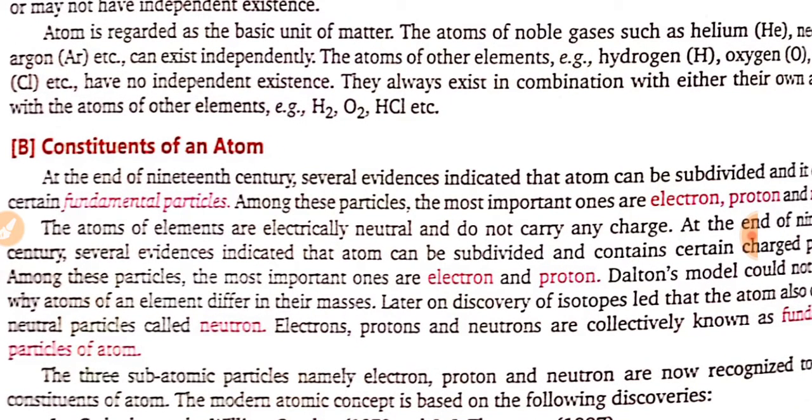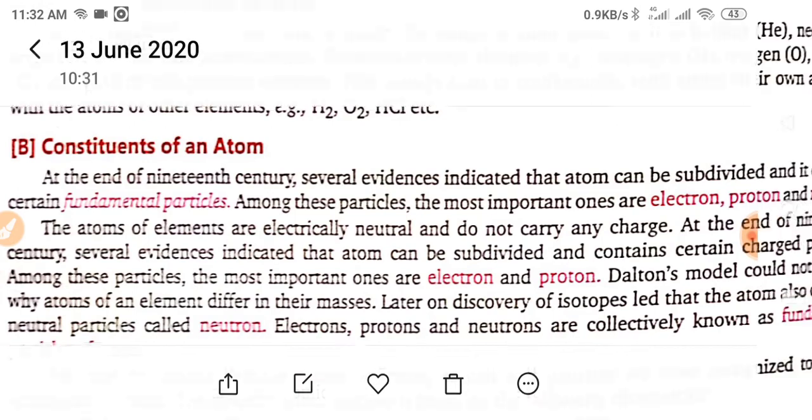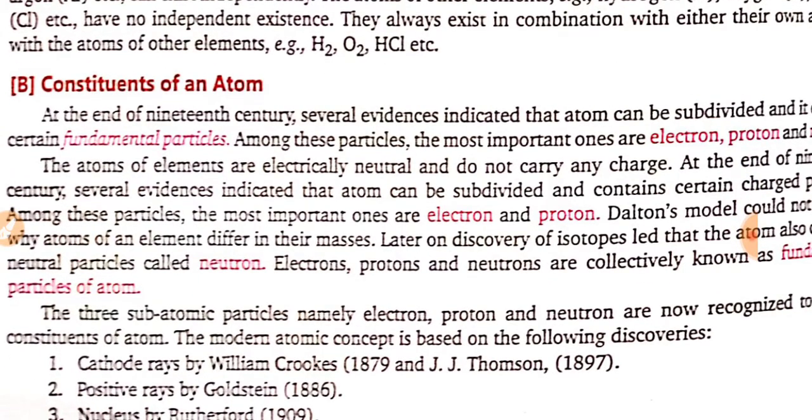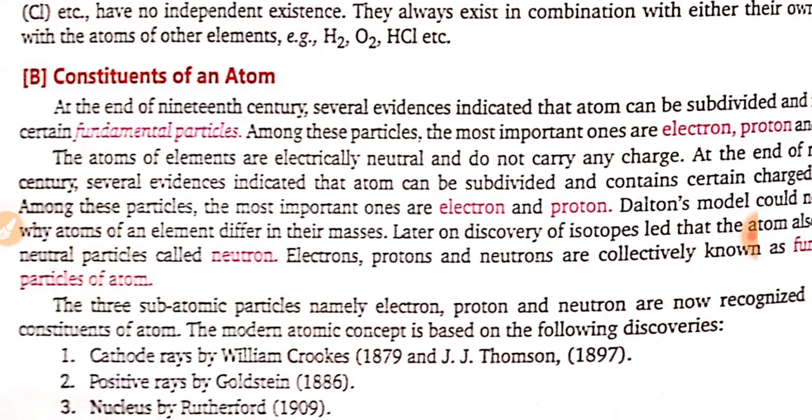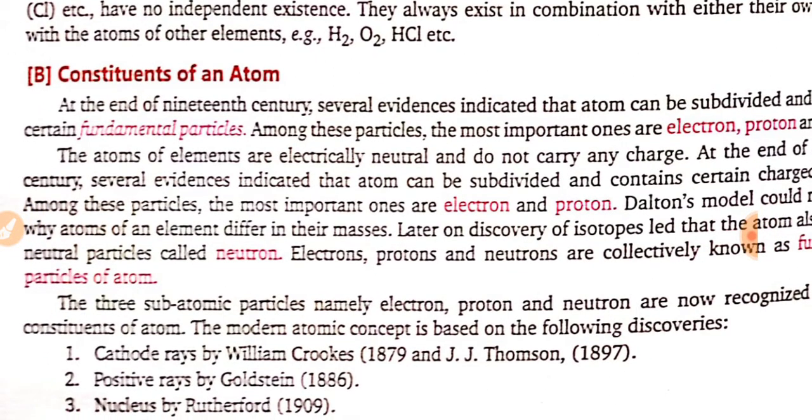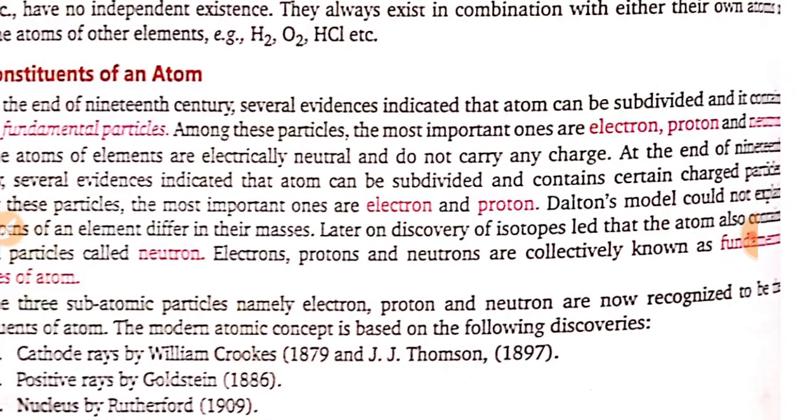Constituents of an atom. At the end of 19th century, several evidences indicated that atom can be subdivided and contain certain fundamental particles. Among these particles, the most important ones are electron, proton and neutron.